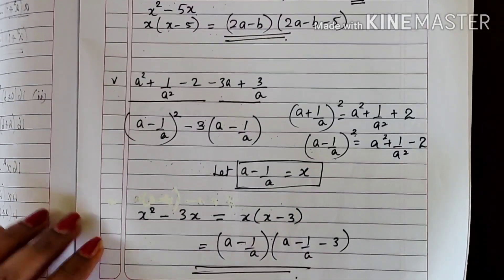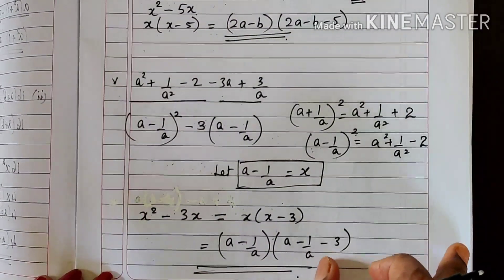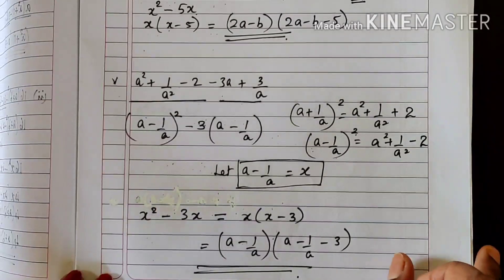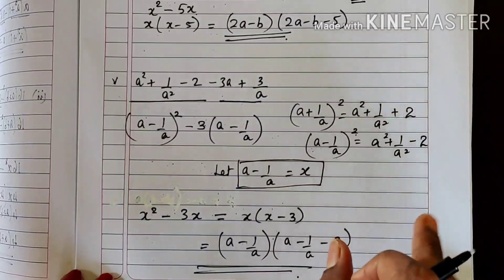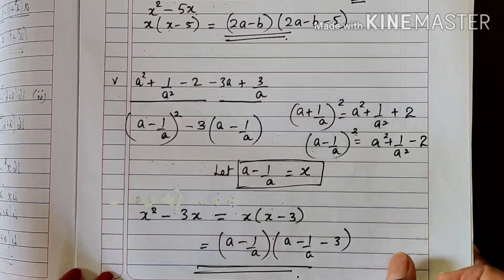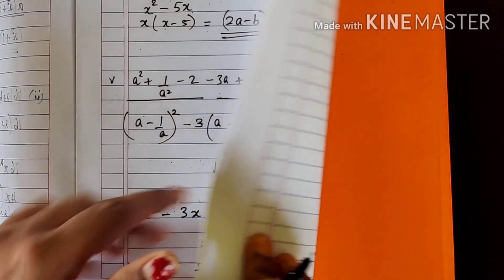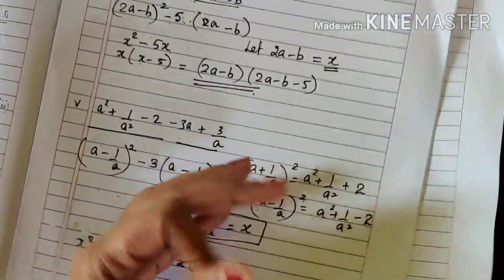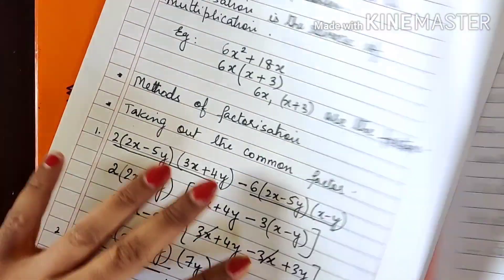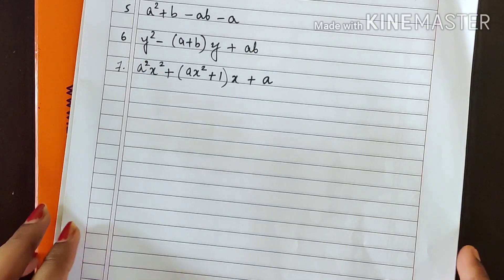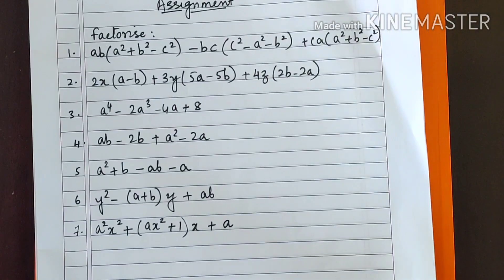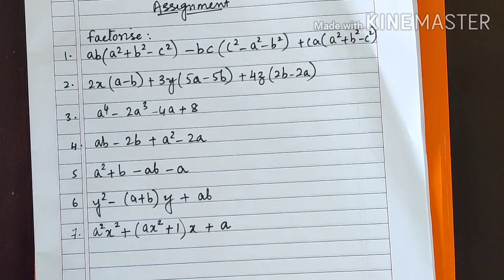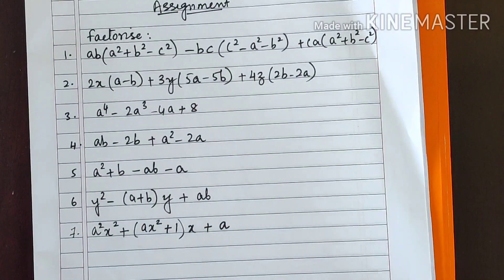So these are the two methods you learned today — taking the common factor out and grouping. These are the first two methods of factorization. You can now make a note of the assignment with regard to these two methods.